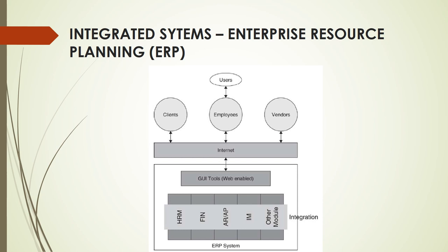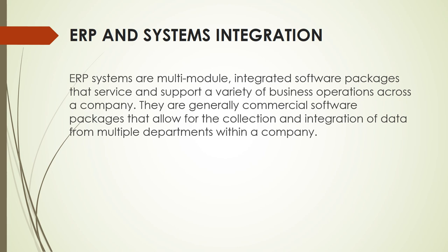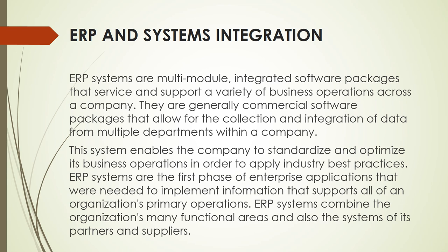Here is an example of how an ERP system looks — from clients, employees, and vendors through the internet to GUI tools. ERP systems are multi-module integrated software packages that service and support a variety of business operations across a company. They are generally commercial software packages that allow for the collection and integration of data from multiple departments. The ERP is typically vendor-based — different vendors provide them and are responsible for integrating different systems in an organization. This system enables the company to standardize and optimize its business operations in order to apply industry best practices.